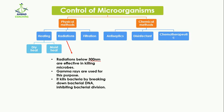The next physical method to control microorganisms is radiation. Radiation below 300 nanometers is effective in killing microbes. Gamma rays are used for this purpose, and they kill bacteria by breaking down bacterial DNA and inhibiting bacterial division.